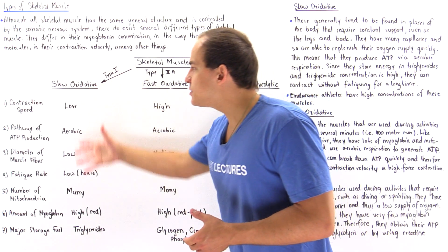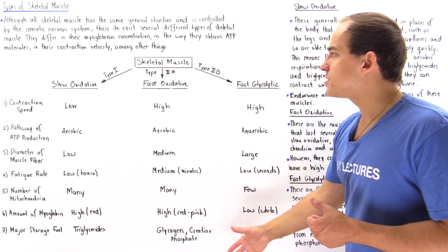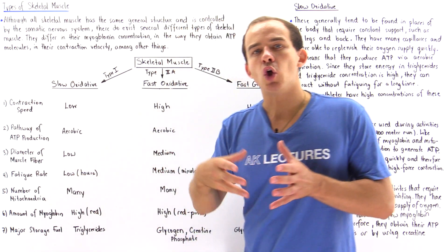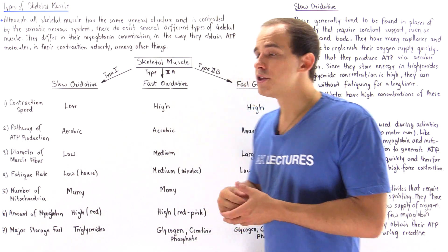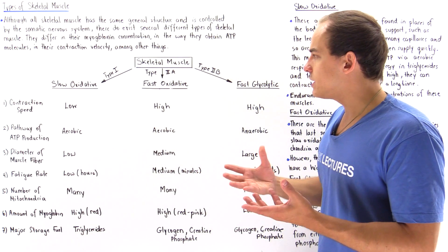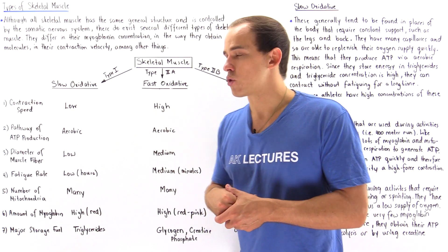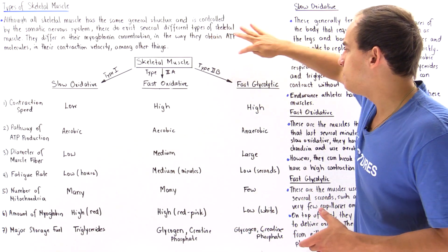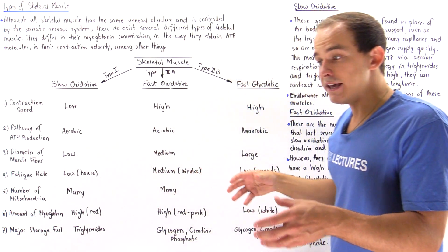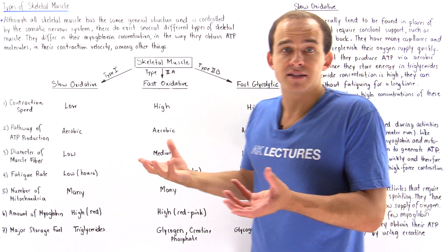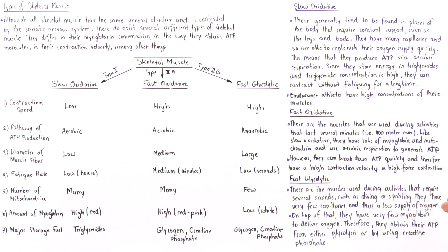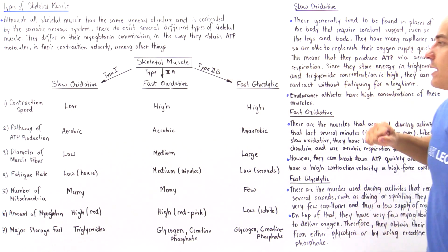If slow oxidative muscles can last hours, fast oxidative muscles basically last minutes. So slow oxidative muscles are used in long distance events such as running a marathon, fast oxidative muscles are used in middle distance events such as running a 400-meter race, and Type 2B — fast glycolytic — muscles are used in sprint events. For example, if we're sprinting 100 meters or swimming 50 meters, fast glycolytic are the muscles that are used.